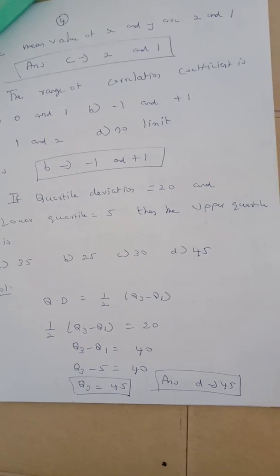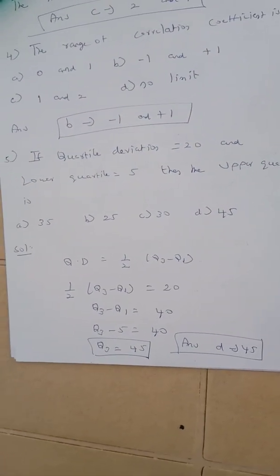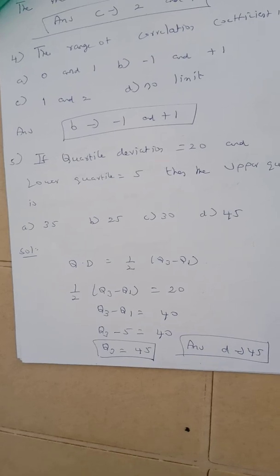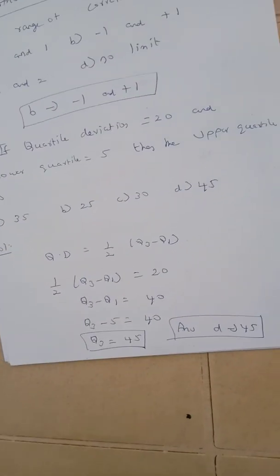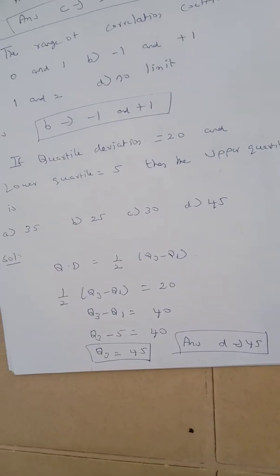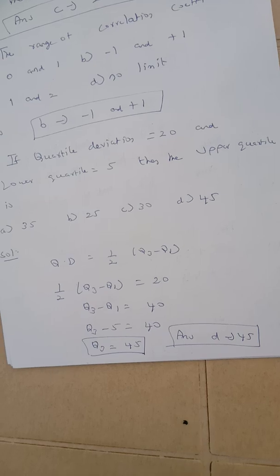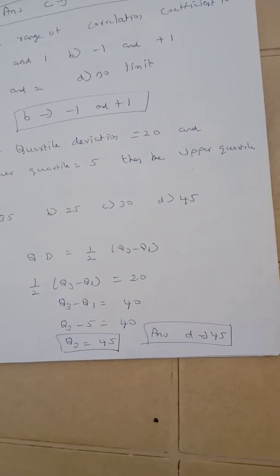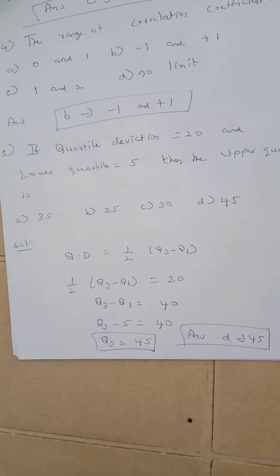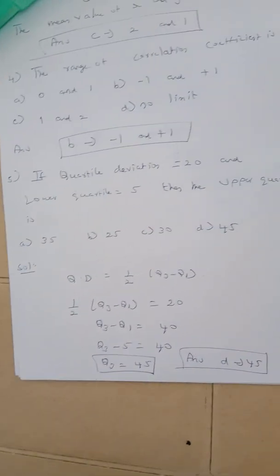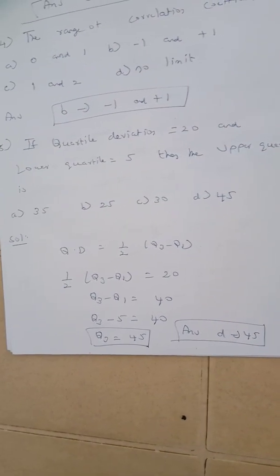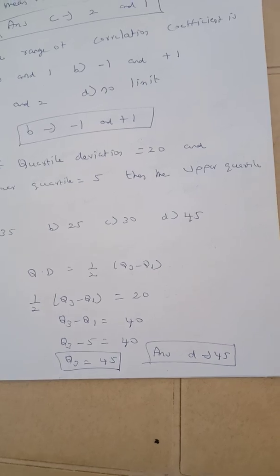Question number 6. If quartile deviation is equal to 20 and lower quartile is equal to 5, then the value of upper quartile. The formula is: quartile deviation equals 1 by 2 into Q3 minus Q1. Substituting quartile deviation as 20 and Q1 as 5, we get Q3 equal to 45. The correct answer is option B.